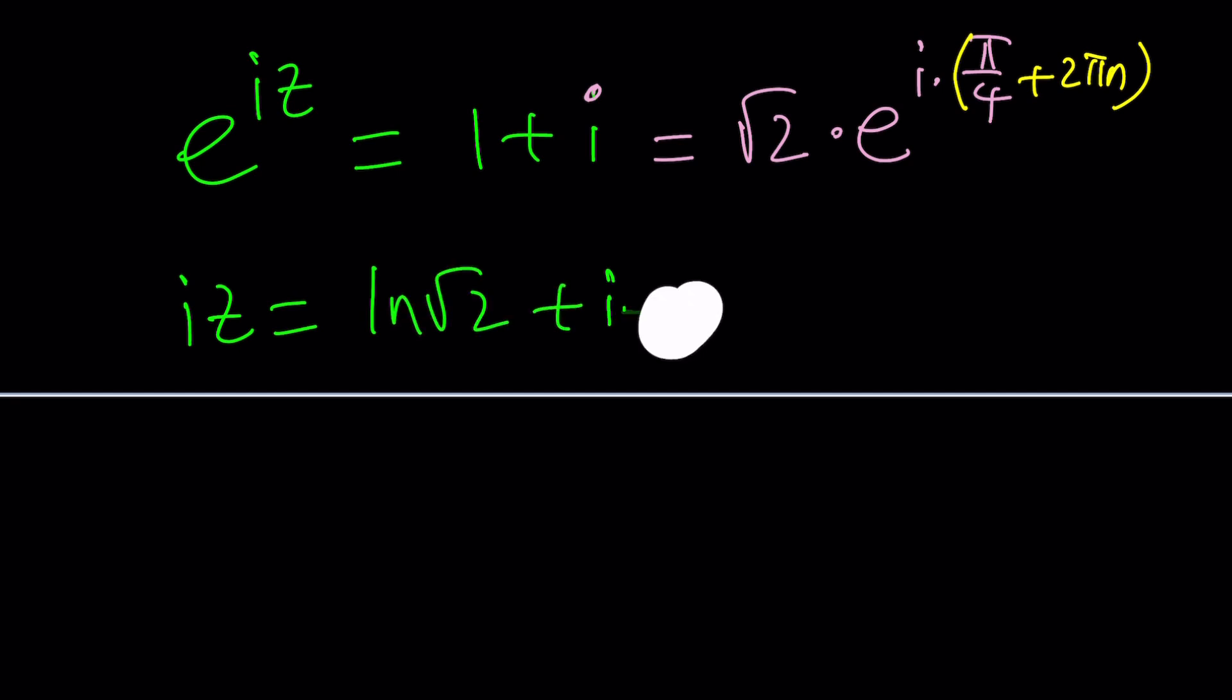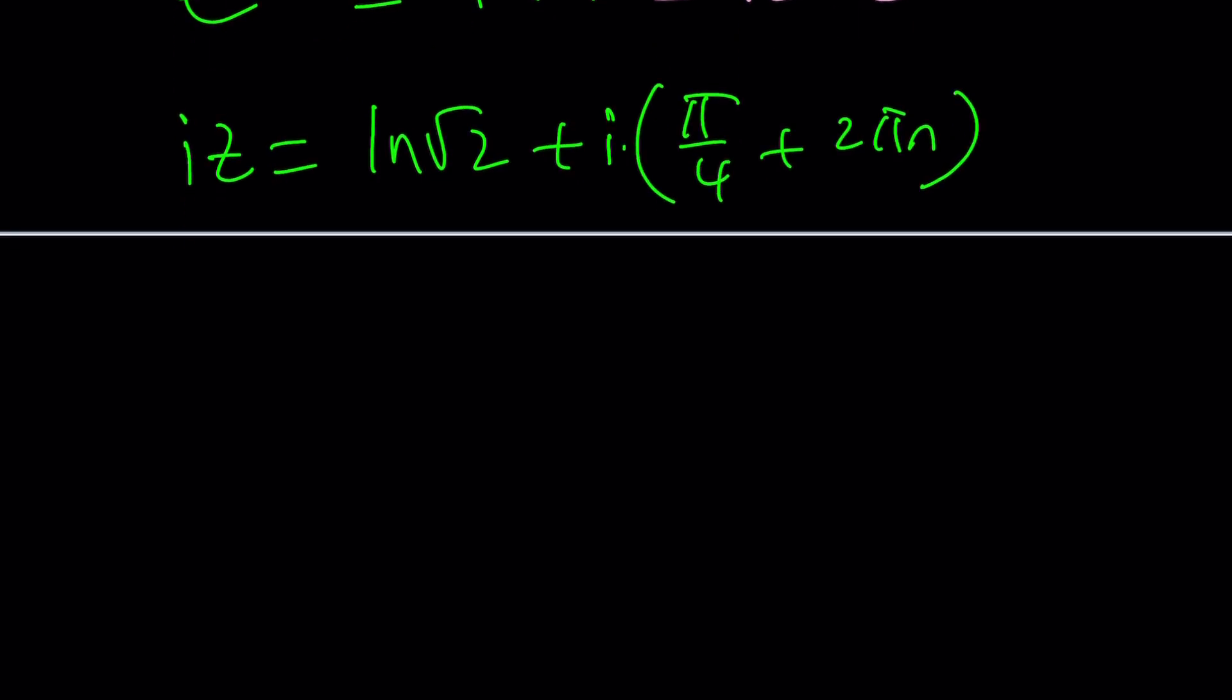pi over 4 plus 2 pi n. Results are going to be slightly different, but it's the same idea. Multiply both sides by negative i. You're going to get negative i squared, which is 1, by the way. That's why I multiply by negative i to get 1. And this will give you pi over 4 plus 2 pi n minus i times ln root 2.